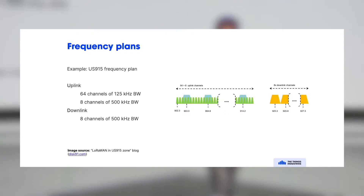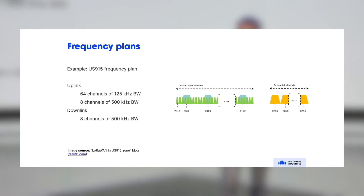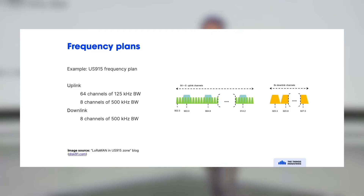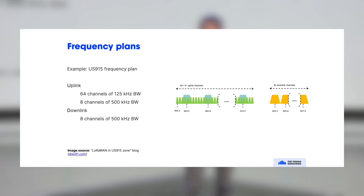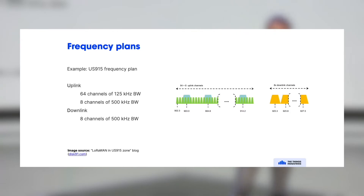There are frequency plans — for example, in the US the band is called US 915. It goes roughly from 902 MHz to 928 MHz. US 915 has a fixed number of channels: 64 uplink channels at 125 kHz bandwidth, eight high-speed channels at 500 kHz bandwidth, and eight downlink channels. That's just how the regional parameters define a region.